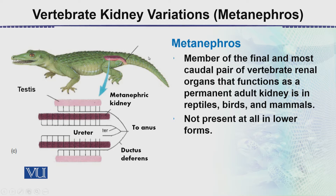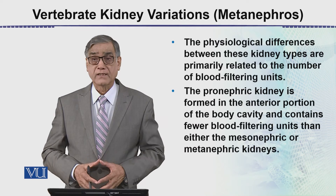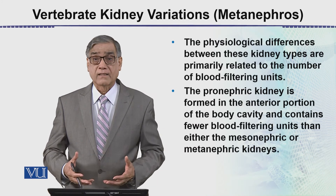In this diagram we can see the metanephric kidney, which is brown in color, and on both sides represent the testes. The duct that has been created is the ureter, which forms the main tube coming from the kidney and moves to the exterior through the ureter.